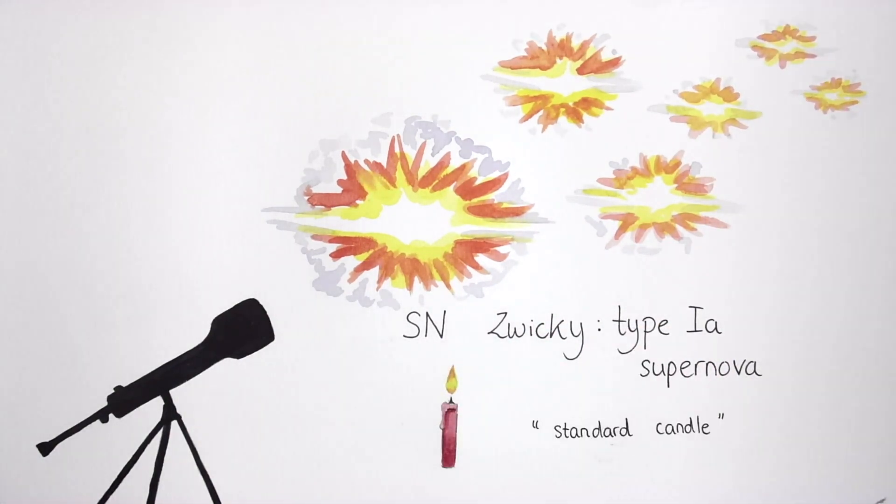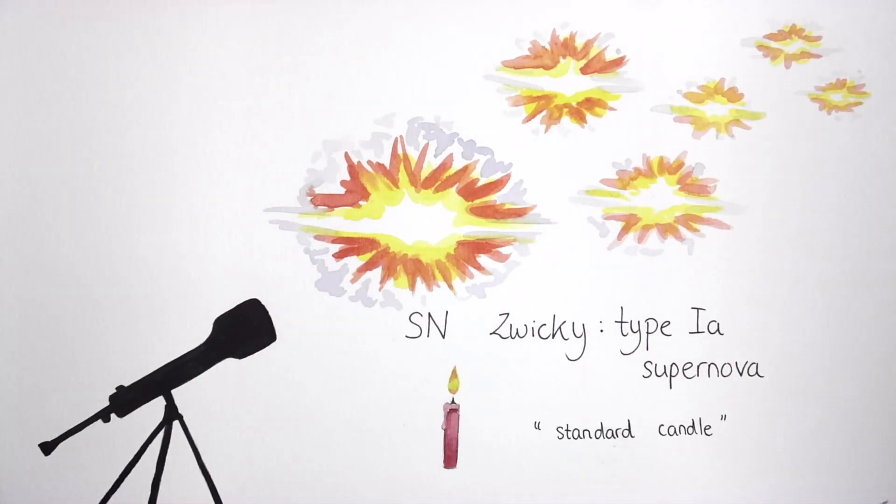But Supernova Zwicky didn't look like other Type Ia Supernovae. It was much brighter and further away.